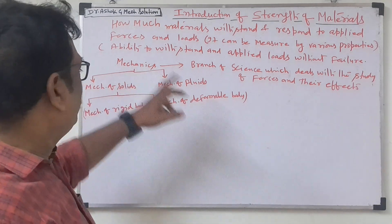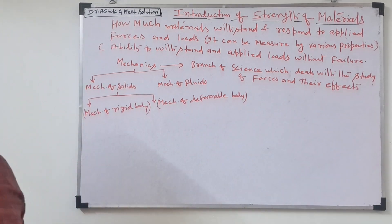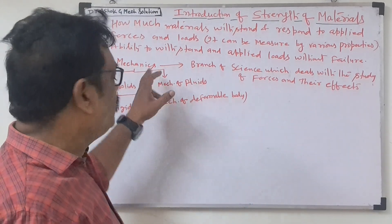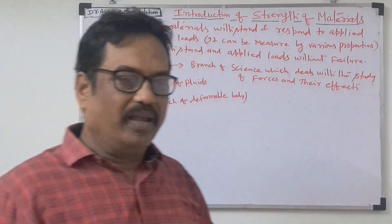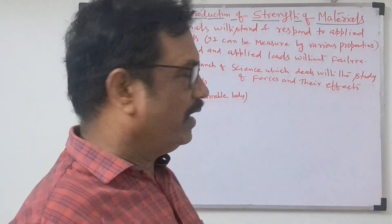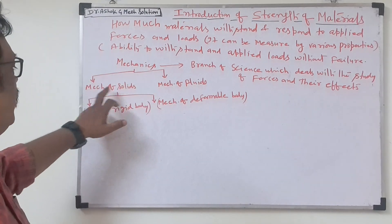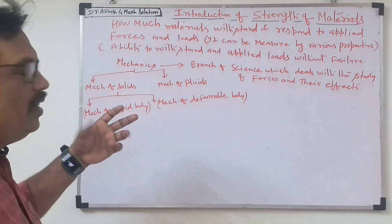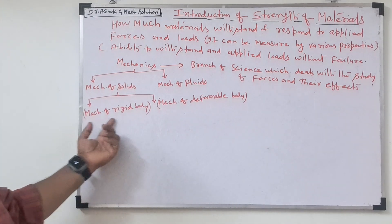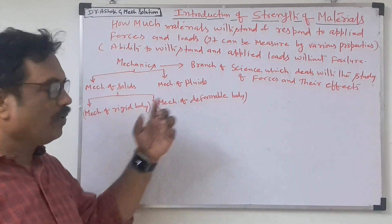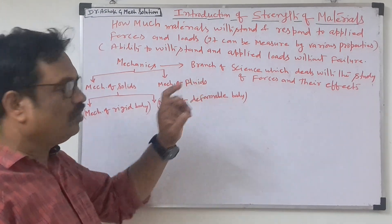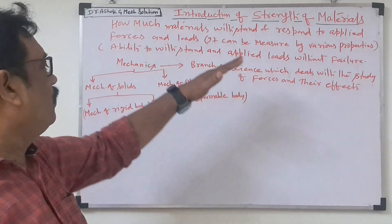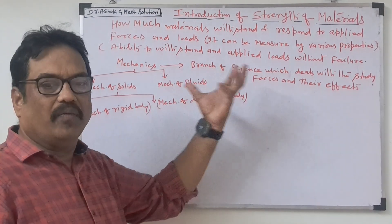Now, mechanics. What is mechanics? It is the branch of science where we study about materials. Mechanics includes engineering mechanics, strength of material, and fluid mechanics. Under mechanics of solid, we have mechanics of the rigid body and mechanics of the deformable body. Under mechanics of fluid, we study fluid forces in a different chapter.